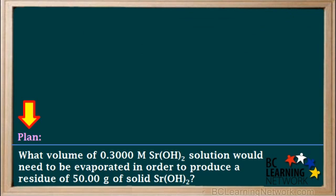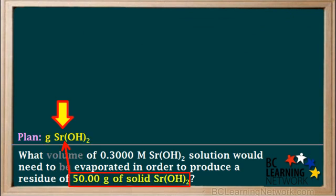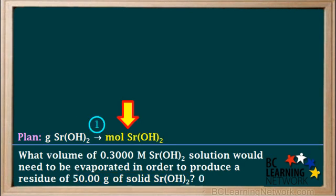We'll create a plan for this problem. Since we're given the mass of solid strontium hydroxide, we start with grams of Sr(OH)₂. In step 1, we'll convert grams of Sr(OH)₂ into moles.